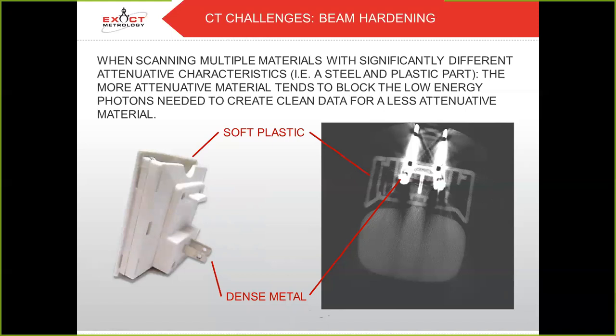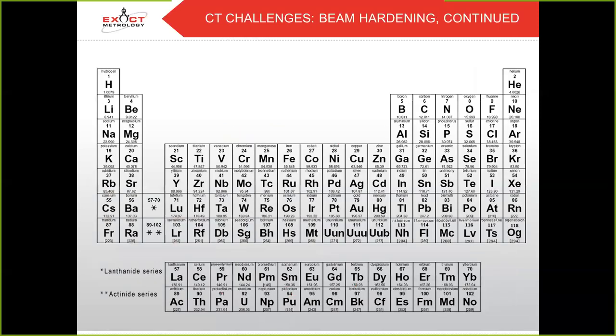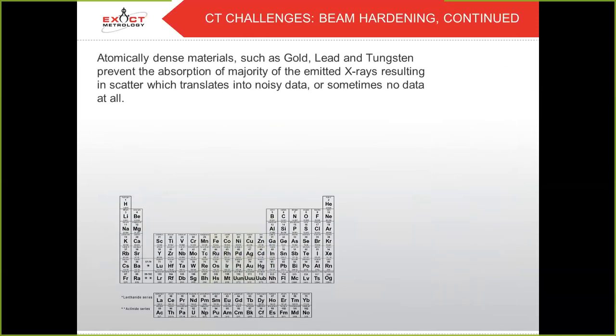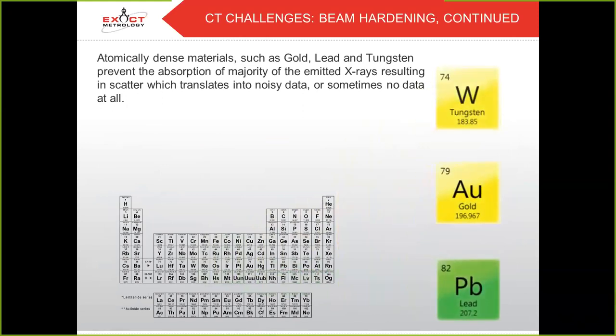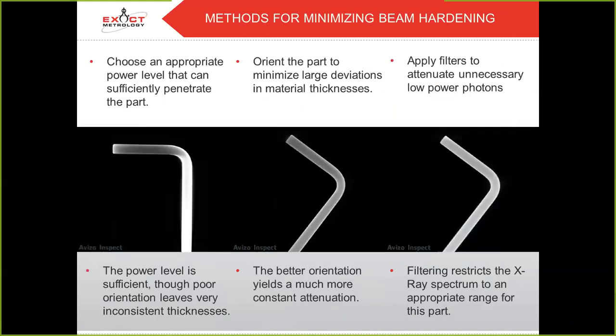The same problem occurs when objects have a high aspect ratio. The metal plug attenuates even more aggressively when the photons must penetrate through an inch of material lengthwise versus a 1/16th of an inch in the other direction. Anatomically dense materials such as gold, lead, and tungsten prevent the absorption of emitted x-rays, resulting in scatter, which translates into noisy data or sometimes no data at all.